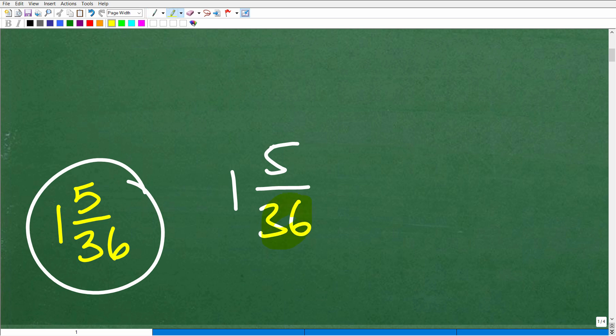If I wanted to write this mixed number fraction as an improper fraction, just remember, what we need to do is take this number, the denominator, multiply it by this number. So 36 times 1 is 36, and then you're going to add 5. What's 36 plus 5? Well, that would be 41. So it would be 41/36.